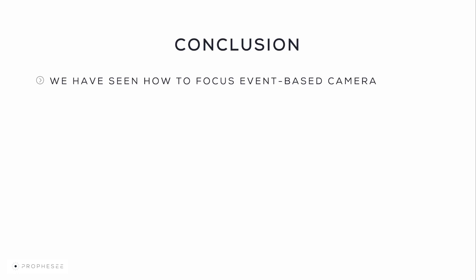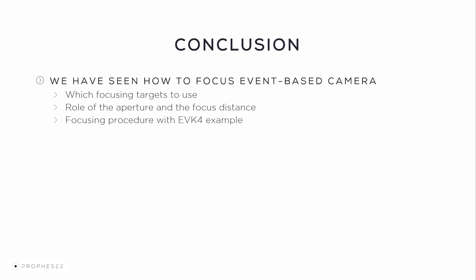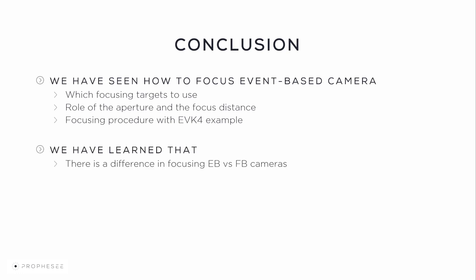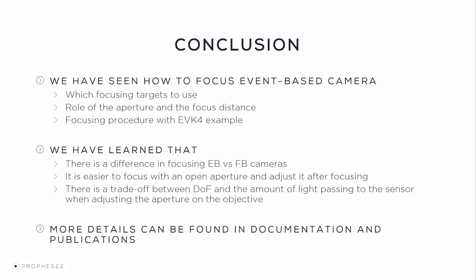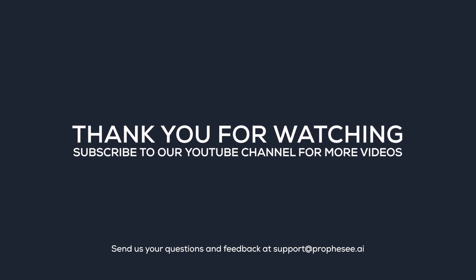In this video, we've shown you how to focus an event-based camera, showing you which focusing targets are usable, the role of the aperture and the focus distance, and what the actual focusing procedure is with an example on the EVK4. We also learned that there is a large difference between the focusing procedure for an event-based camera and frame-based cameras. It's easier to focus with a maximally open aperture and then readjust the aperture later on, and there is a trade-off between the depth of field versus the amount of light coming into the sensor when closing the aperture. More details can be found in the documentation and publications linked in the description below. We look forward to your feedback — thank you for watching, and we'll see you in the next videos.